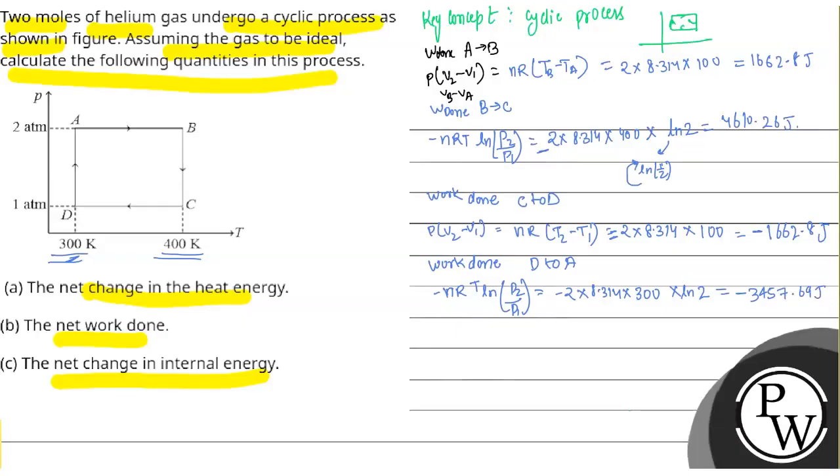What should be the total work done? Total work done is equal to all work done from A to B plus work done from B to C plus work done from C to D plus work done from D to A. This will approximately come to 1153 joules. This is the answer.